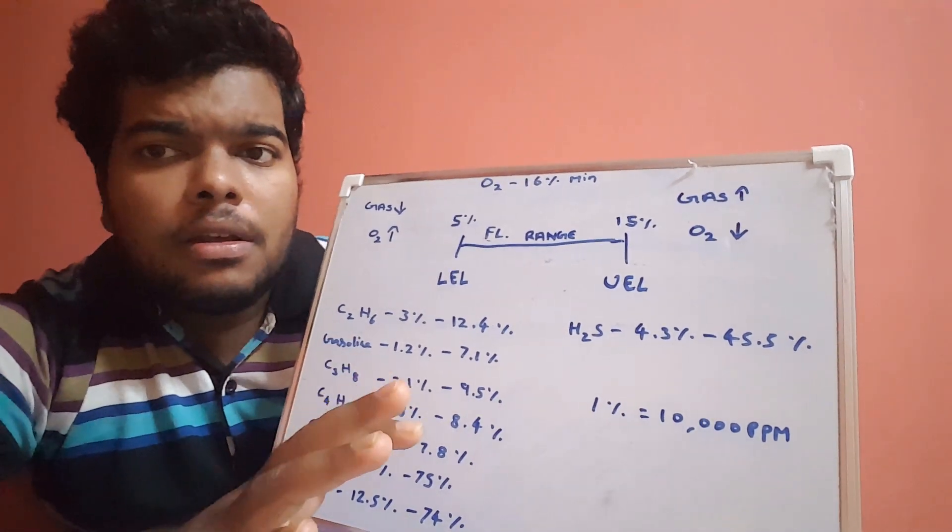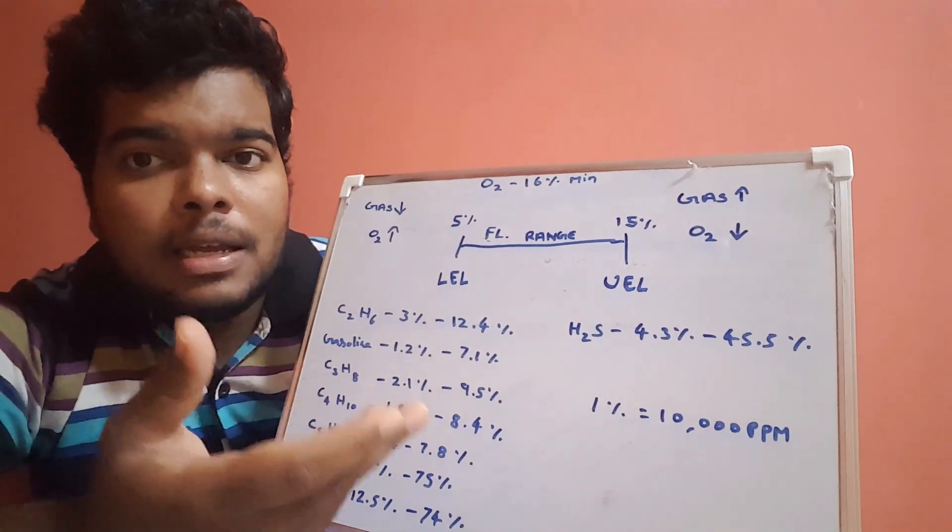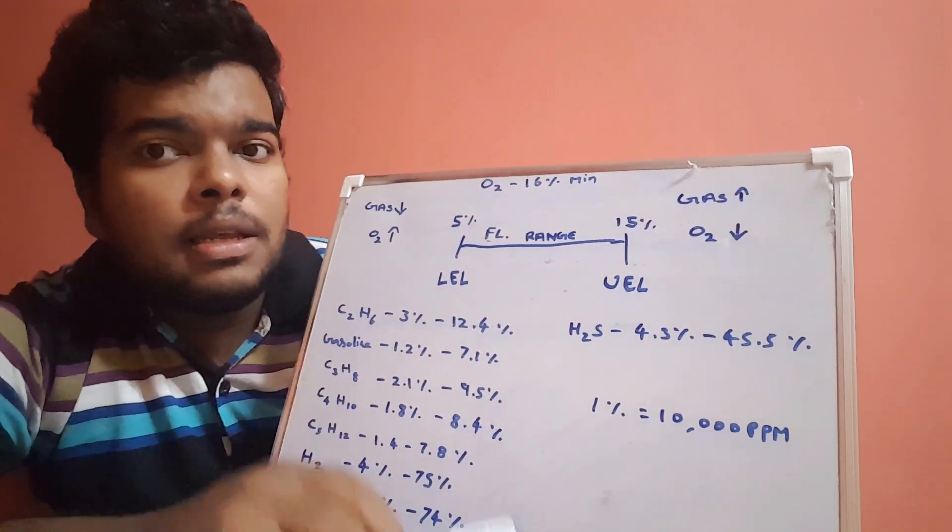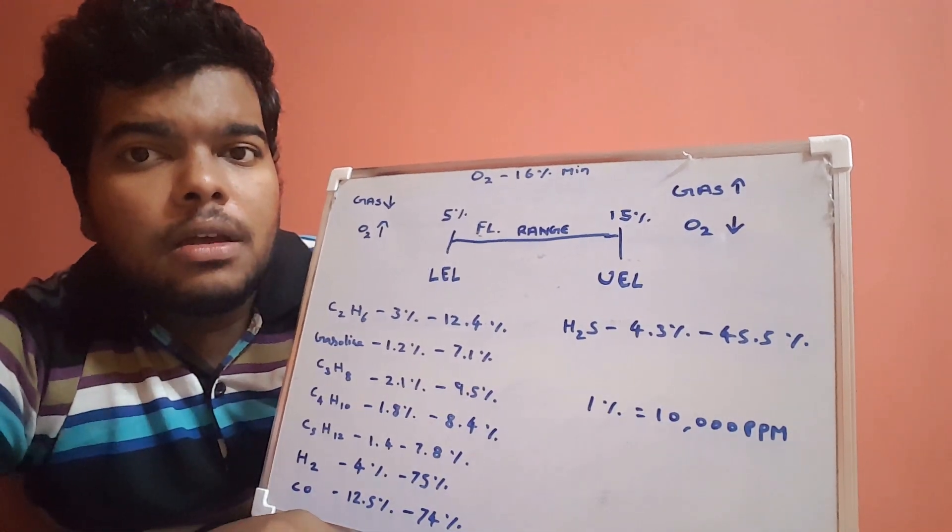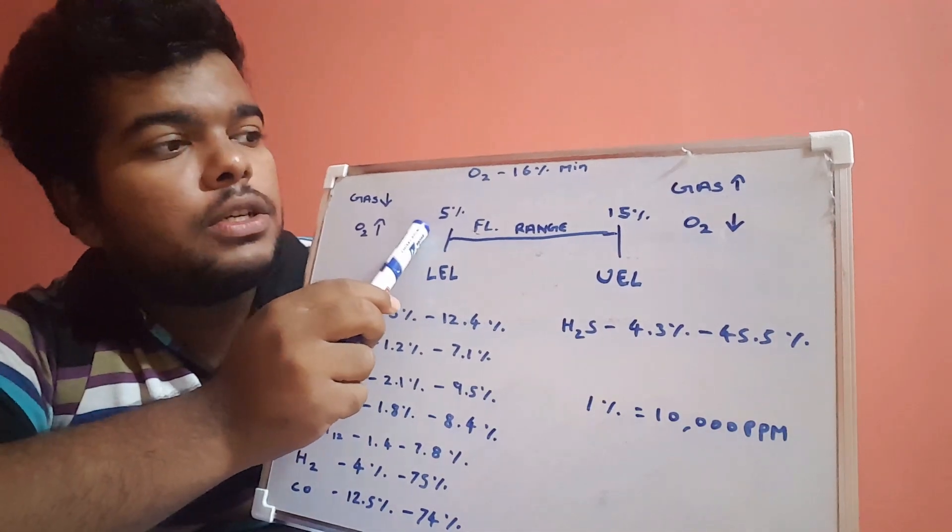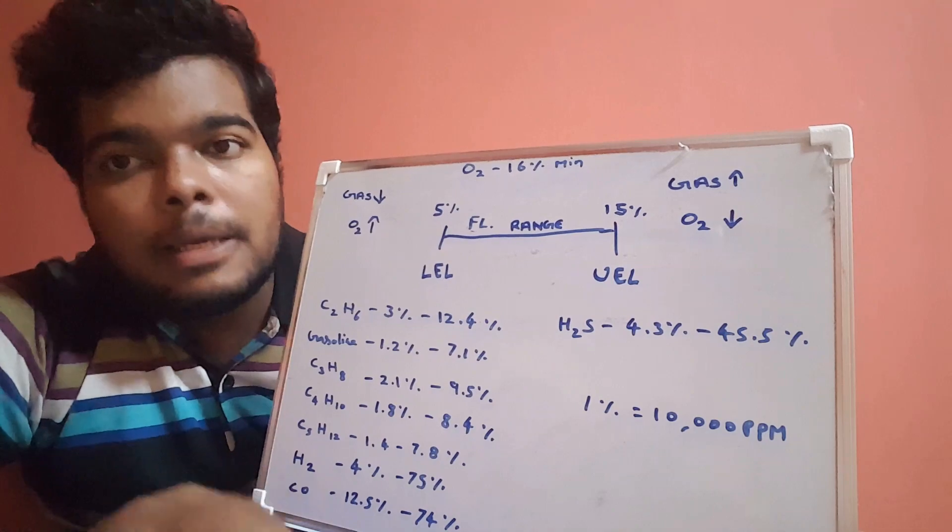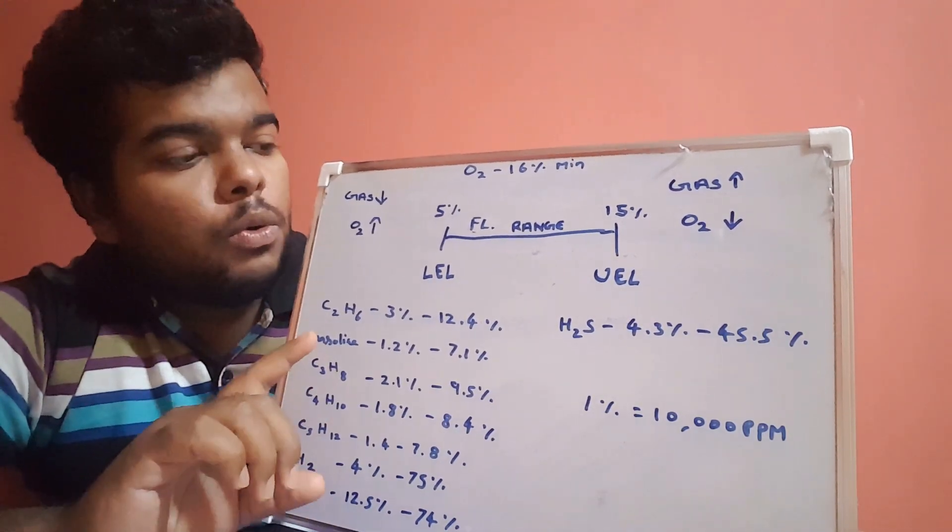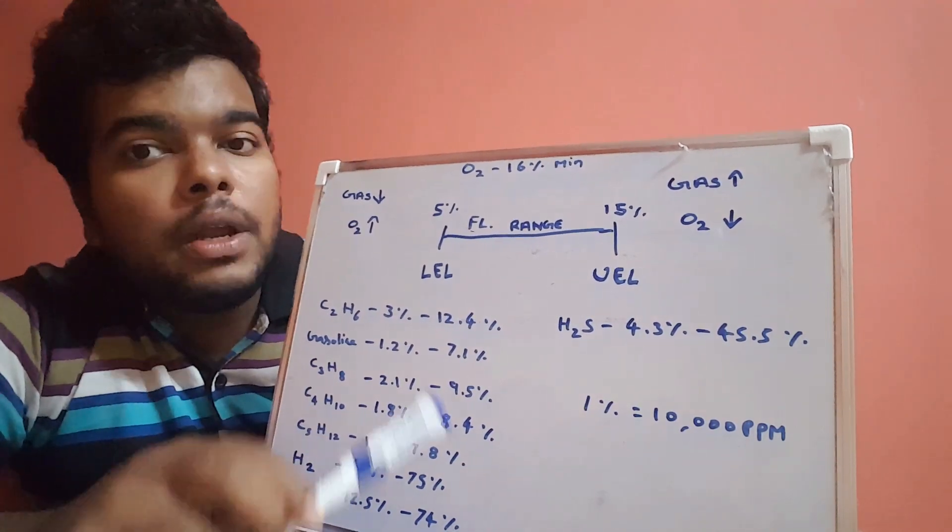They have taken the reference of methane. The LEL value will be measured from 5 percentage to 15 percentage, which is the UEL value of methane. Up to 5 percentage, the alarm will not give.